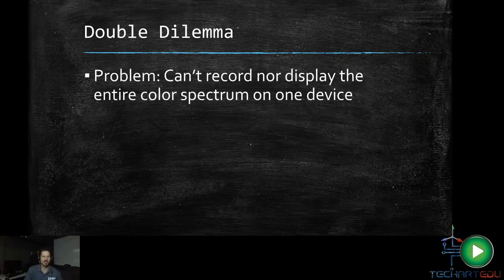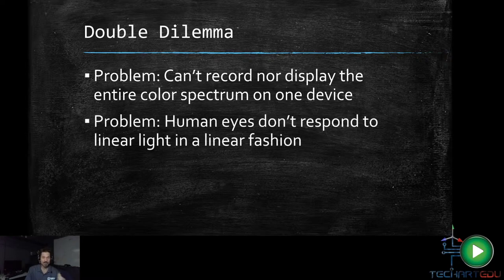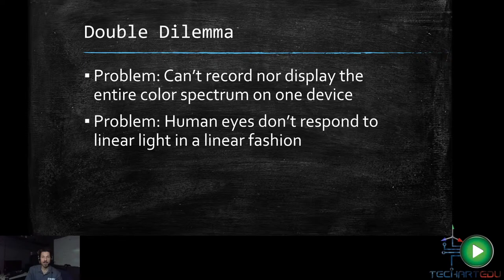So we really have a problem on our hands. It's a double problem. It says, one, the first is you can't record or display the entire spectrum on one device. In fact, what we saw is sRGB. It was pretty small compared to Profoto RGB, which was the full spectrum. But sRGB is kind of where we're stuck at. And it doesn't display everything. That and just what we showed earlier with nominal color space versus gamma color space is that humans' eyes don't respond to linear light in a linear fashion. It's curved. So what do we do?